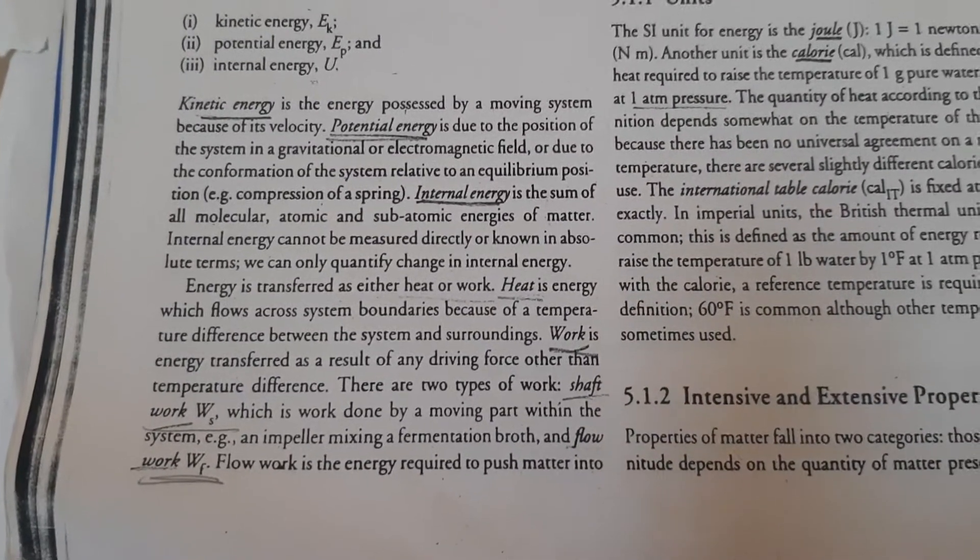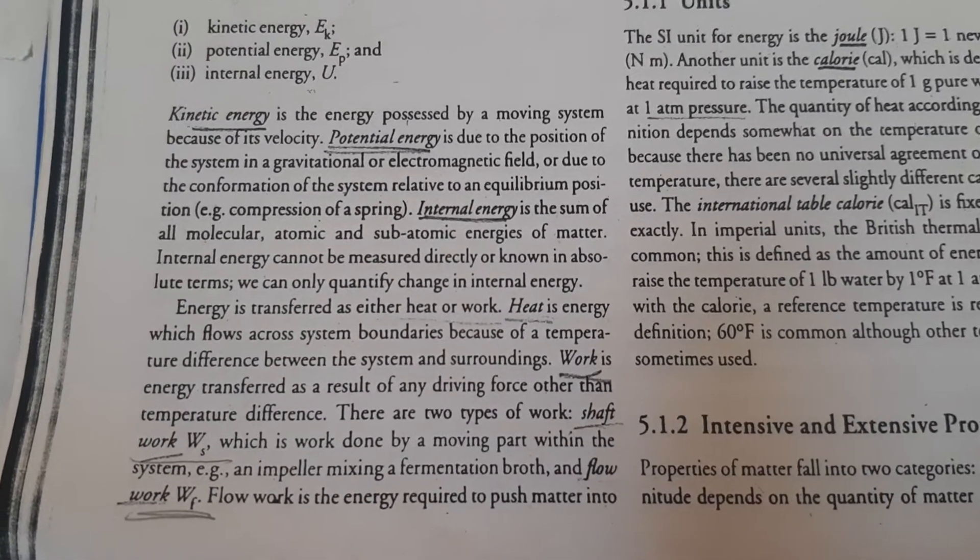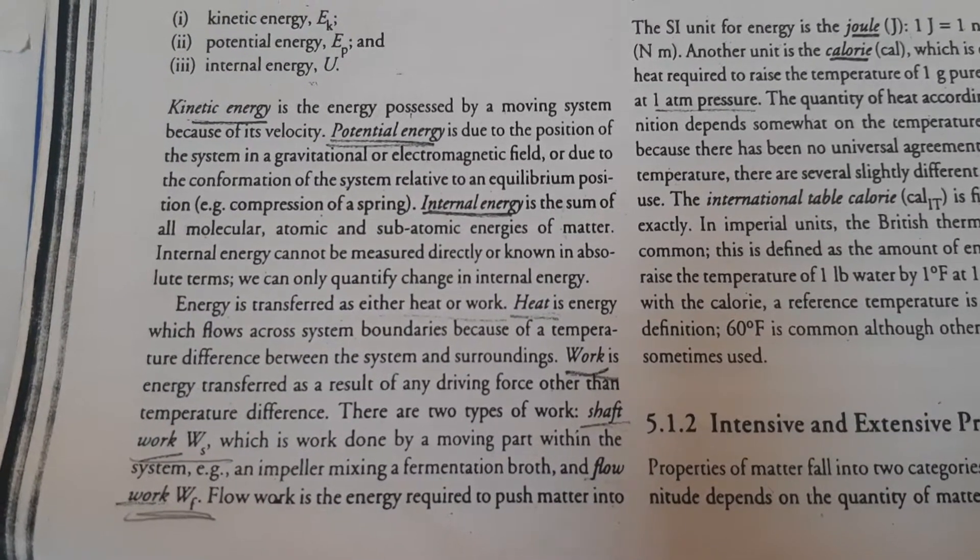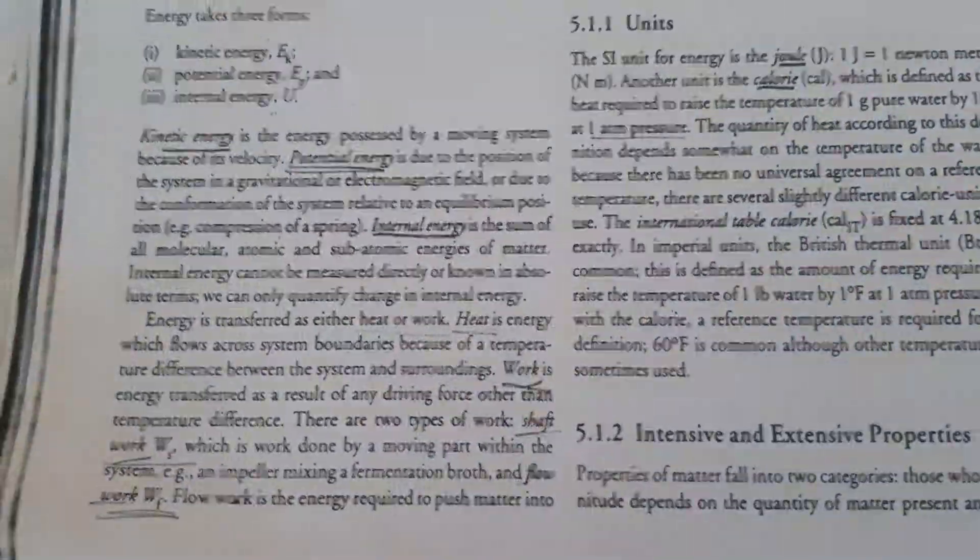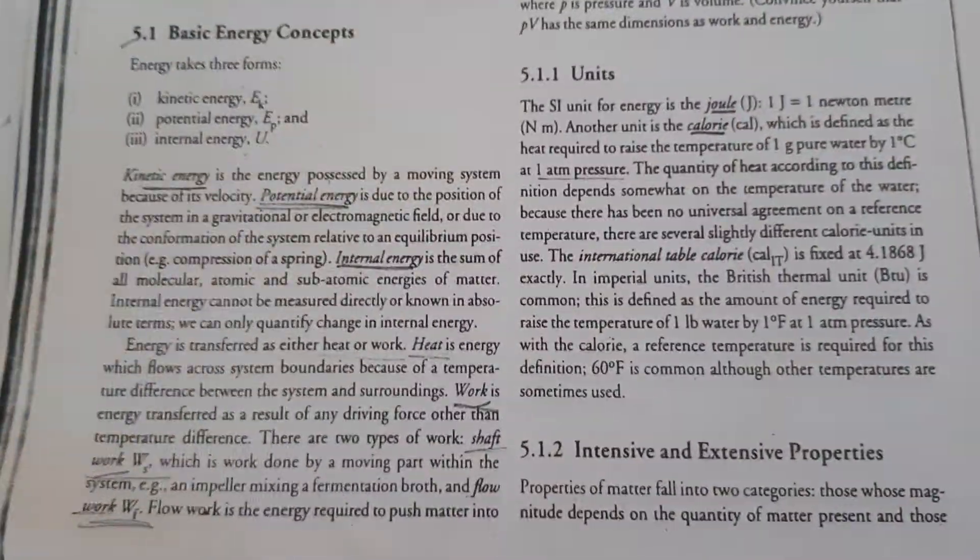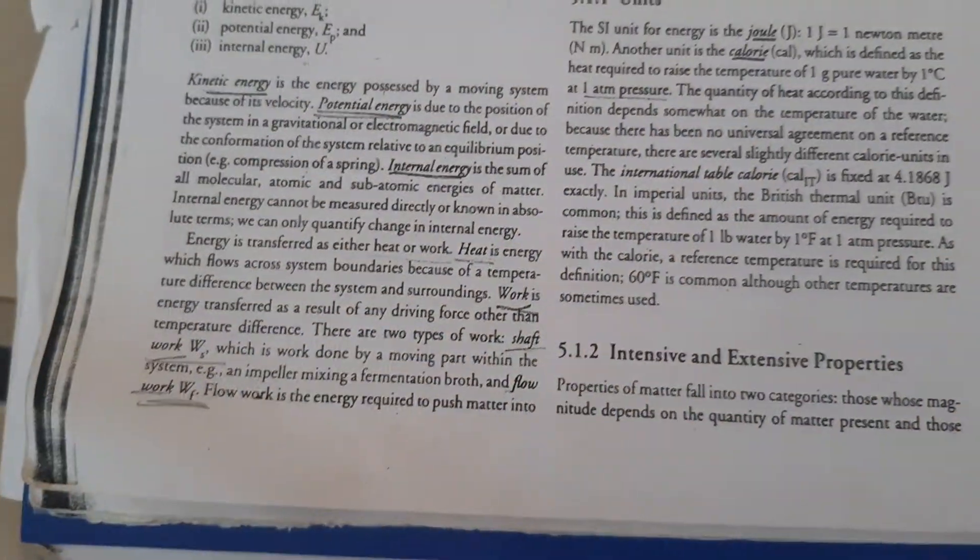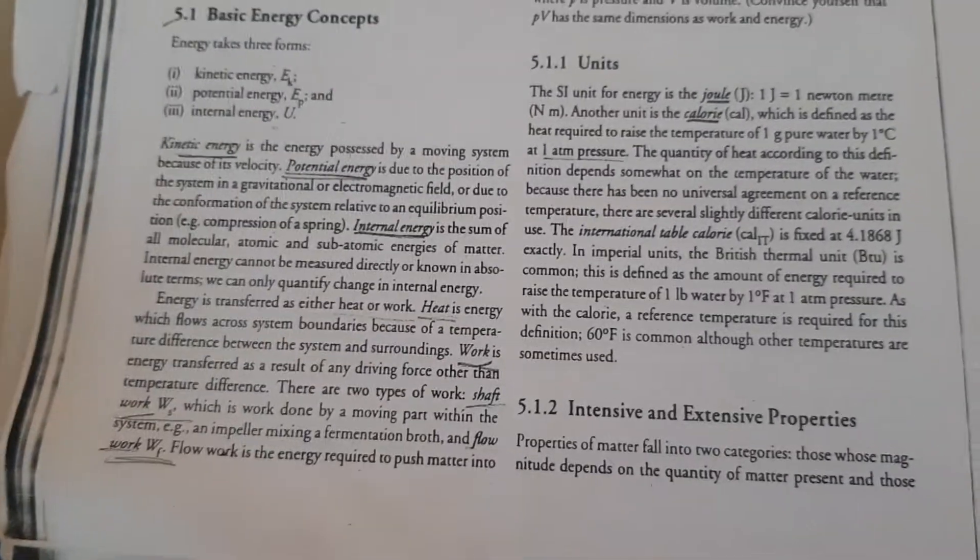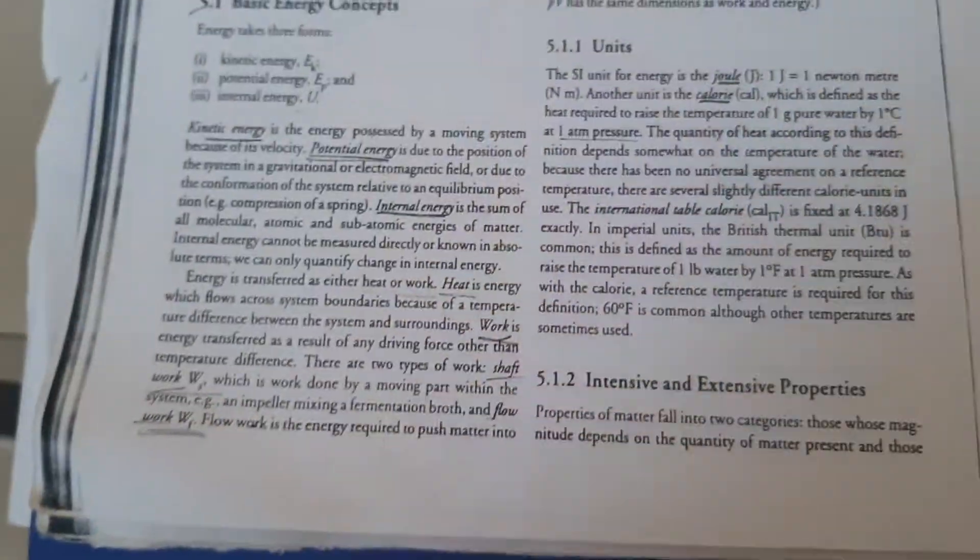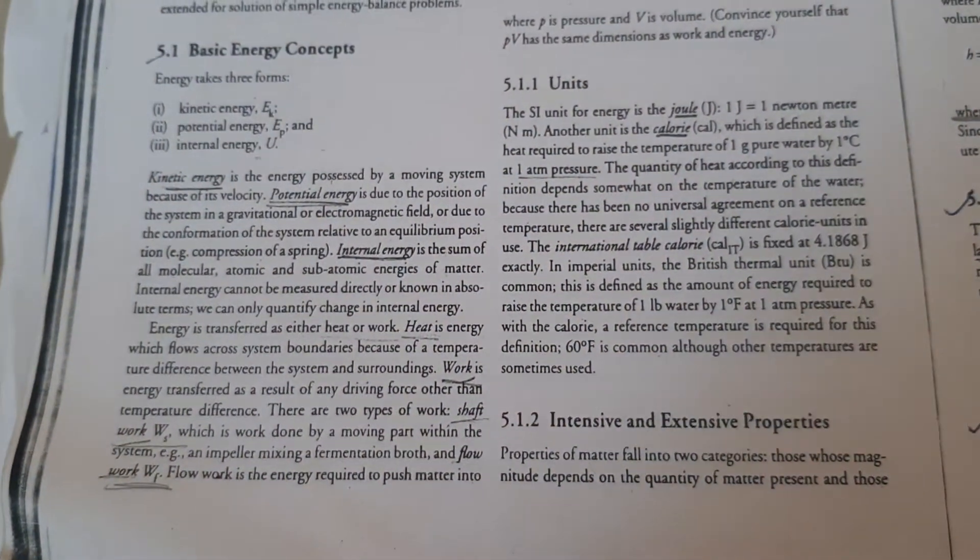Where is the heat? Heat is energy which flows across system boundaries because of temperature difference between the system and surrounding. You know, what is the system and what is surrounding? System is the system that we are talking about, which is the material balance, energy balance, mass transfer, heat transfer, which is the target. We call it as a system. And the outside environment, we call it as a surrounding.